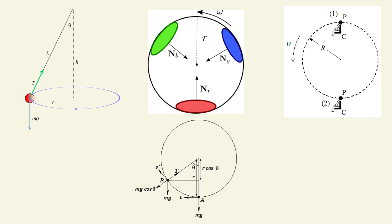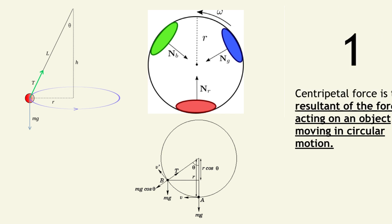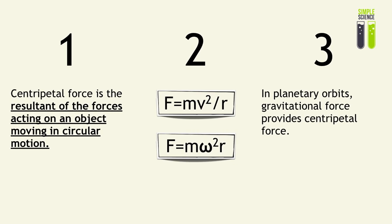But the harder example is vertical circular motion with variable speed, which I will talk about in another video. Here are three quick summary ideas that we will take away from this video.